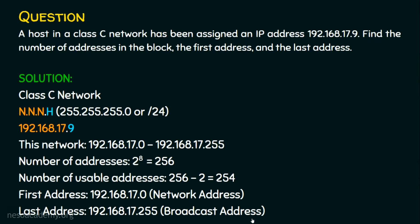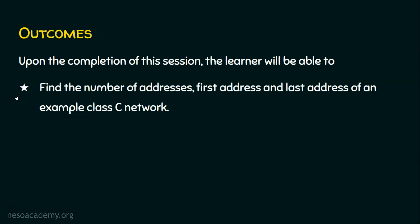That's it — we have solved this problem. To crack this type of question, you need to know the default subnet mask, how many octets are the network portion, and how many are the host portion. A Class C network has a maximum of 256 IP addresses per network, where 256 minus 2 gives 254 usable addresses, since the first and last are reserved. This is classful addressing. I hope you now know how to find the number of addresses, first address, and last address of a Class C network. Thank you for watching.